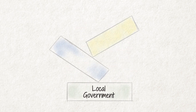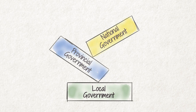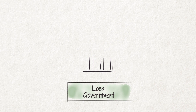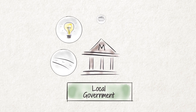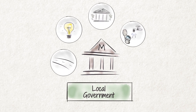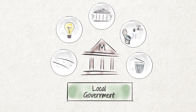Local government is one of the three spheres of government, with the provincial and the national spheres making up the other two. Local government in South Africa consists of municipalities, which deliver many of the services that people rely on in their daily lives.